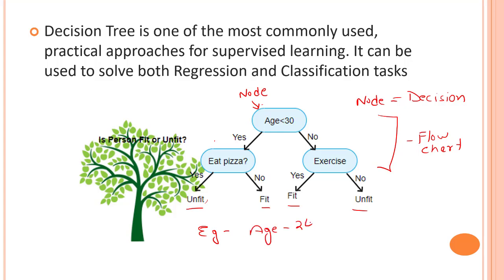Let's take an example: my age is 24. We check if age is less than 30 — true, so we move down. Now the question is: do I eat pizza? Yes, so I am unfit according to this model. In reality I might be fit, but I am unfit according to my model. That's how the decision tree algorithm works — each node is responsible for some kind of decision and from that we predict different outcomes.